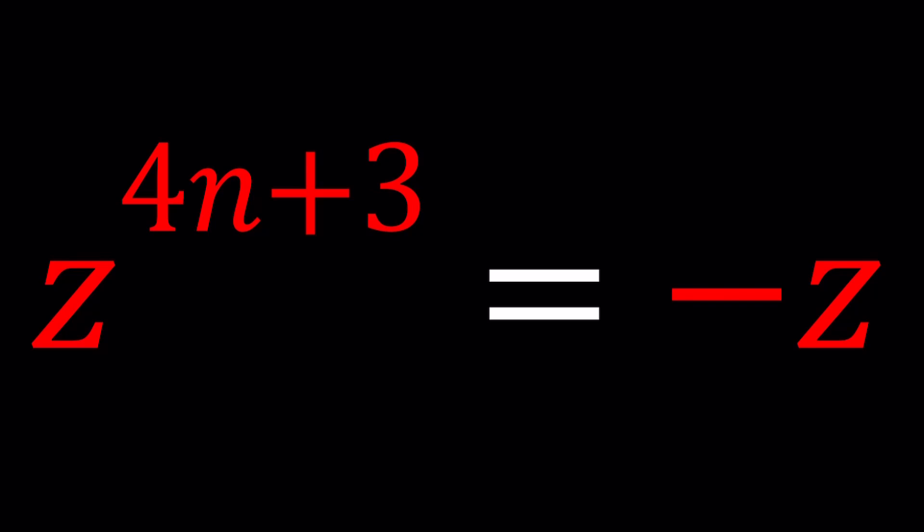We have z to the power 4n plus 3 equals negative z. Again n is an integer. So to be able to solve this problem we could probably do many other things besides using the polar form. That's what I'm going to use.